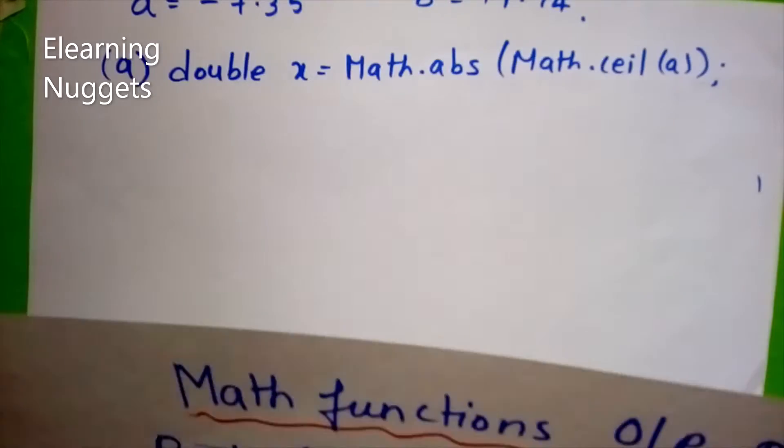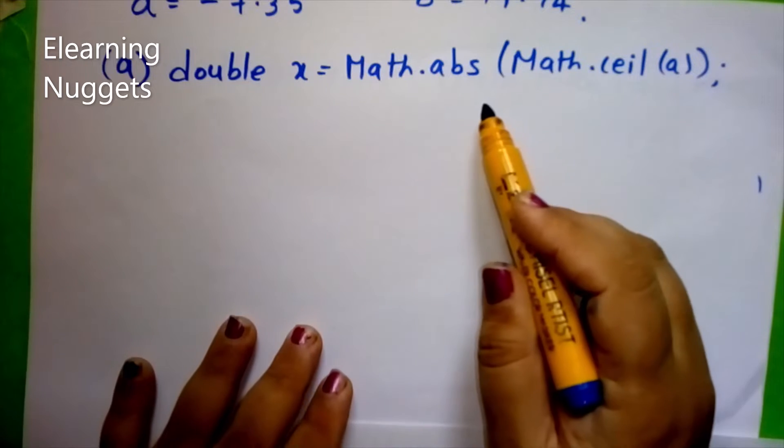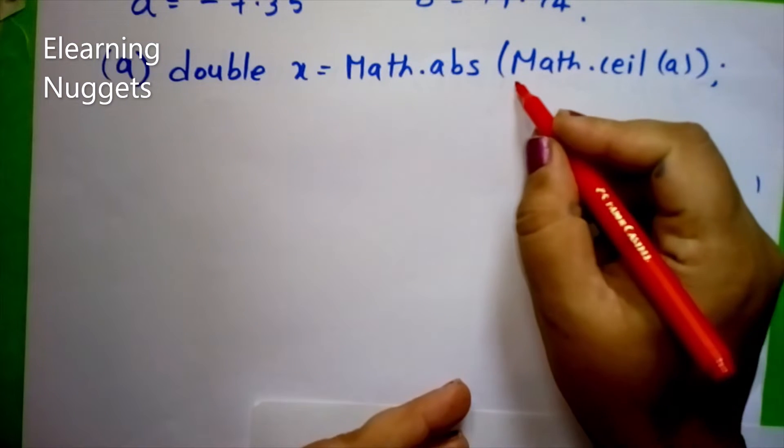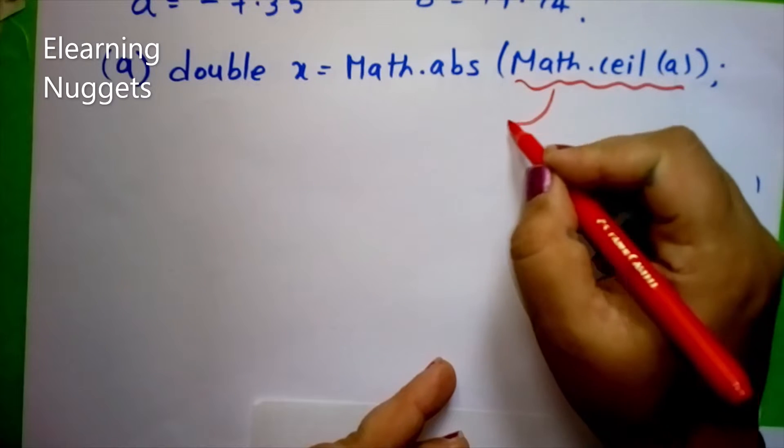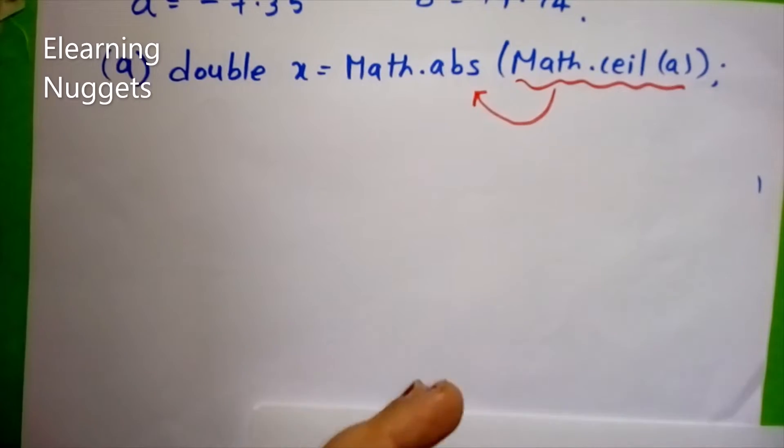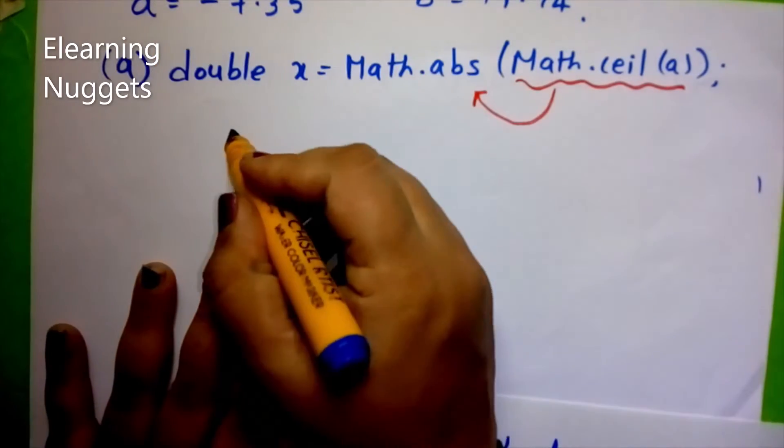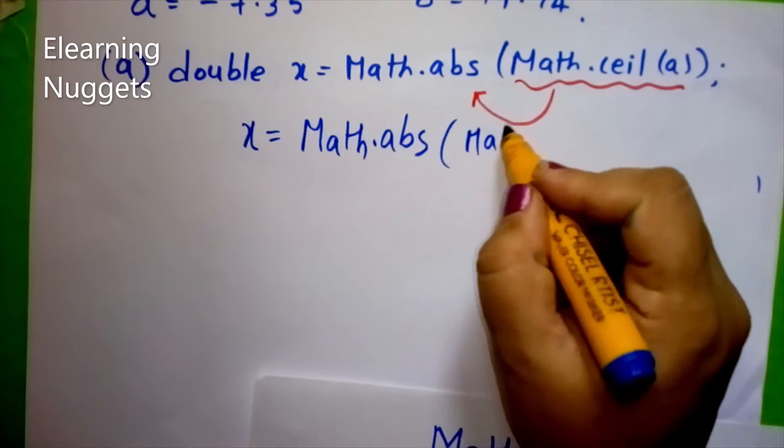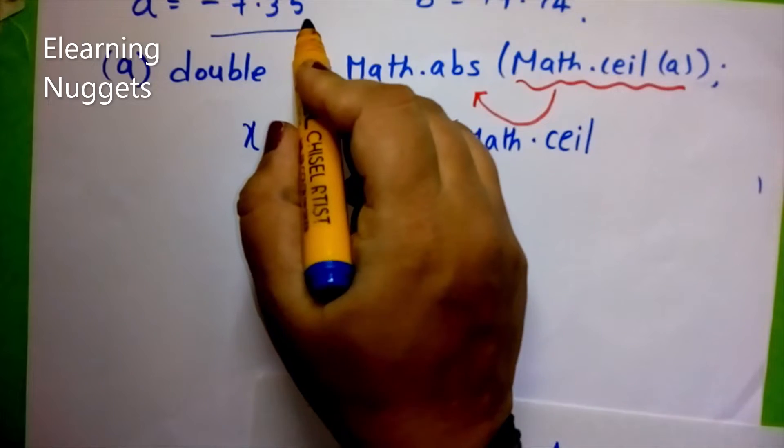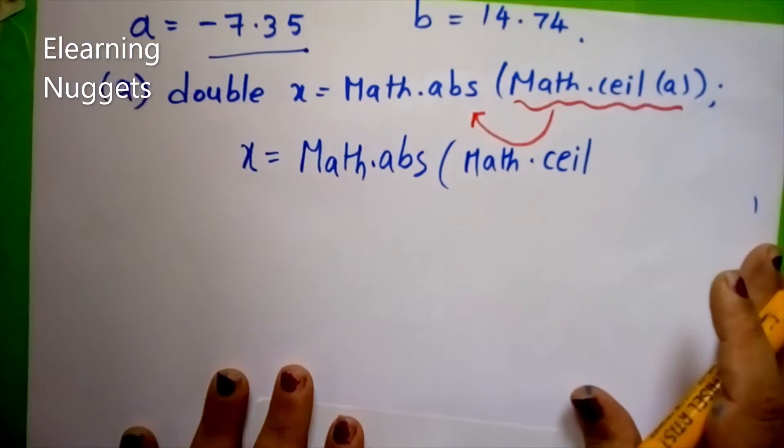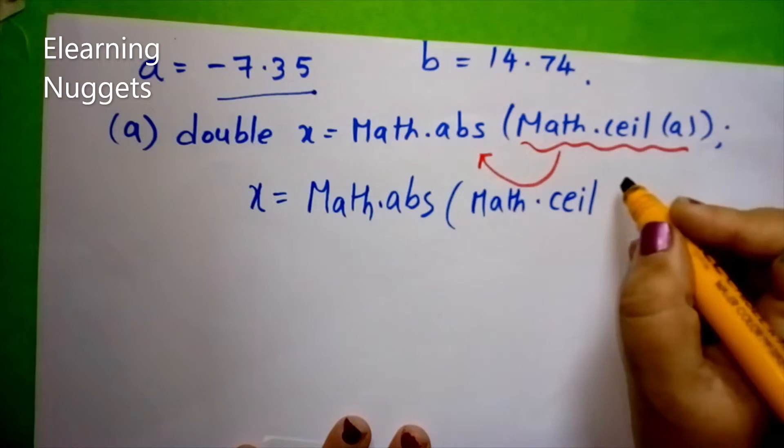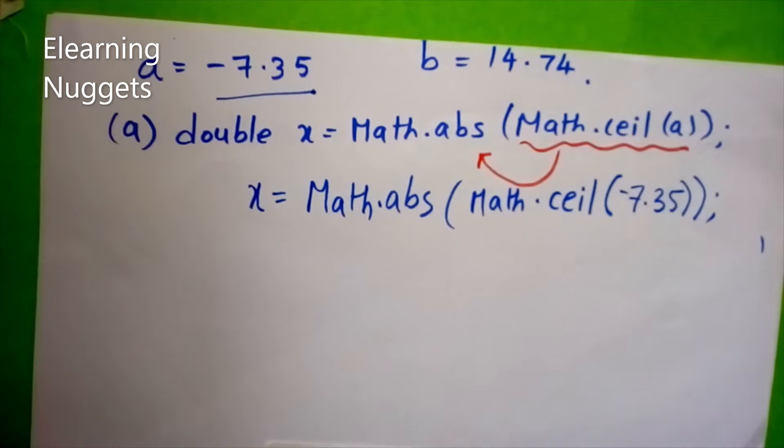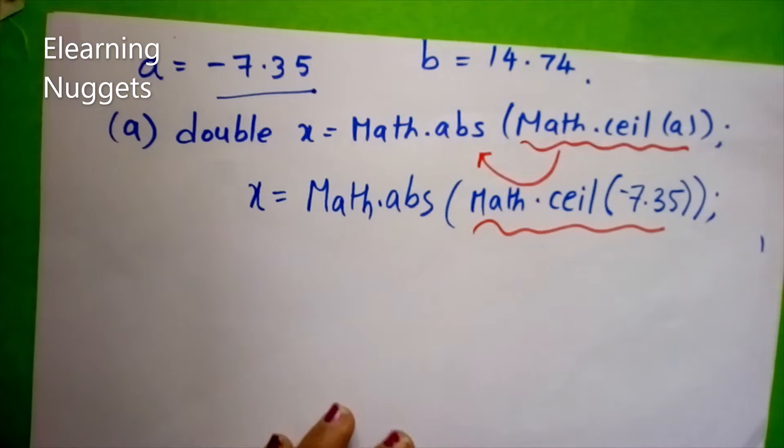The first question here that you have is double X is equal to math dot absolute of math dot ceil A. Always we have to solve the inner parenthesis first. This should be solved and whatever result you get that should be applied to the outer math function. We need to expand this value. Here it will be X is equal to math dot absolute of math dot ceil. What is the value of A here? It is minus 7.35. Don't forget the minus sign. We need to put this value minus 7.35 here. Now we have to first solve this particular part. That is math dot ceil of minus 7.35. What does the function ceil do?